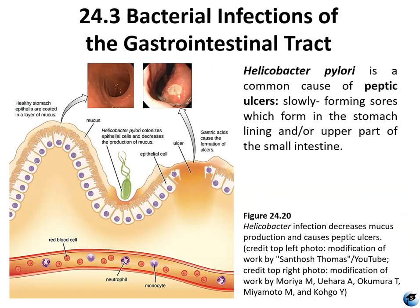Helicobacter pylori causes peptic ulcers in the stomach or in the small intestine by decreasing mucus production.